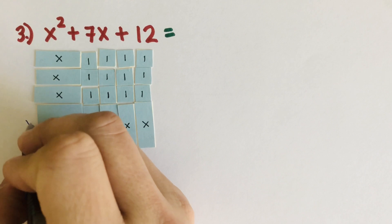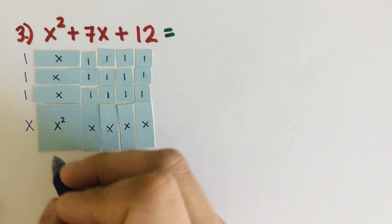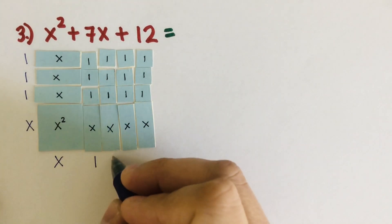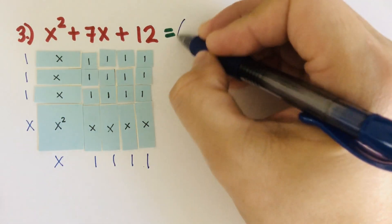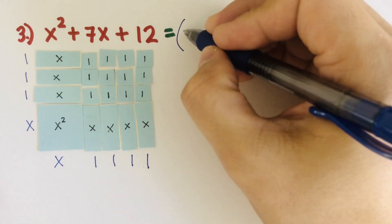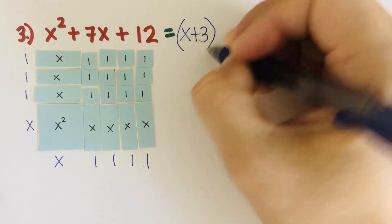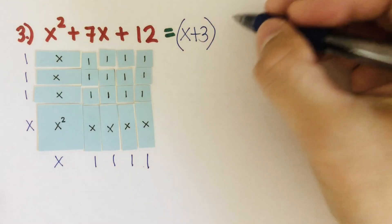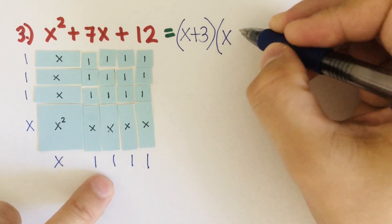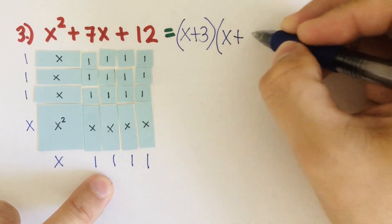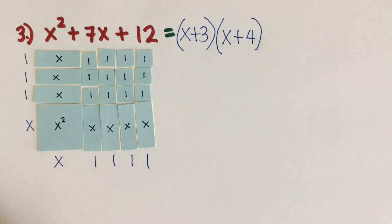I'm going to put that over there and complete the rectangle. To write the factored form, I label the width: x, 1, 1, 1 — that's x plus 3. And the length: x, 1, 1, 1, 1 — that's x plus 4. So the factored form for x squared plus 7x plus 12 is (x + 3)(x + 4).